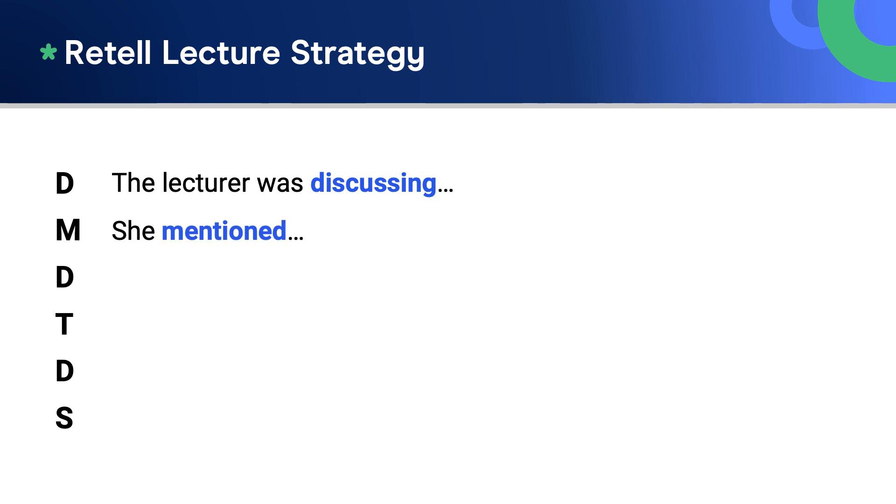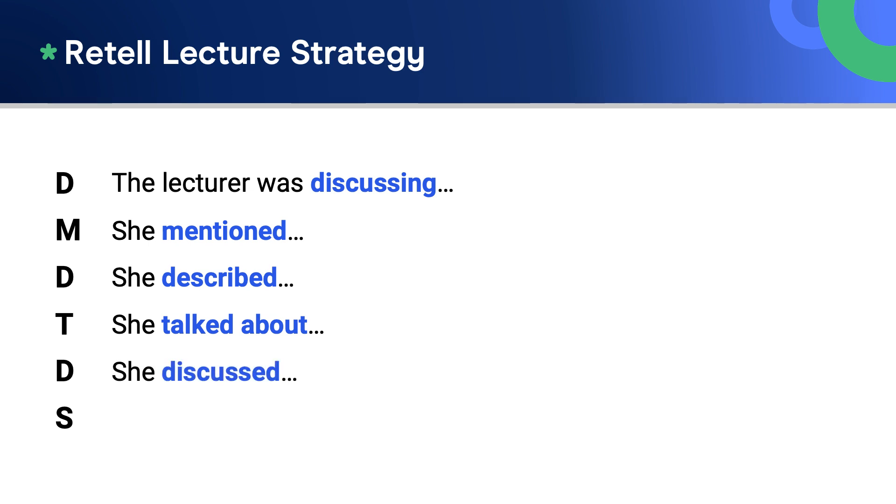Then use the mnemonic D-M-D-T-D-S to retell the main ideas: the lecture was discussing, she mentioned, she described, she talked about, she discussed, she suggested that. Remember that you have ten seconds to gather your thoughts and edit your notes after the recording stops. Use your own words where possible by selecting synonyms and using paraphrases. Do not pause, hesitate or repeat yourself. And practice.